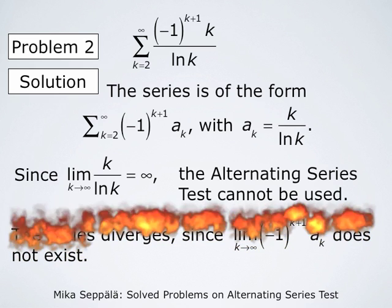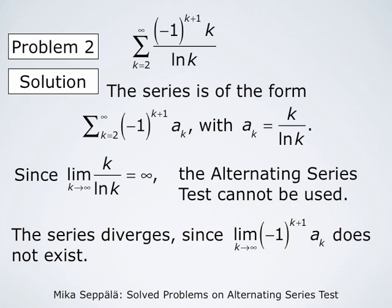We easily conclude that the series diverges since the limit of the general term negative 1 to the power k plus 1 times ak does not exist. For every other value of k, negative 1 to the power k plus 1 times ak is a positive number and these positive numbers increase. And for every other value of k, the term is a negative number and these negative numbers approach negative infinity. Therefore this series does not converge, since if it were to converge its general terms would have to have limit 0.